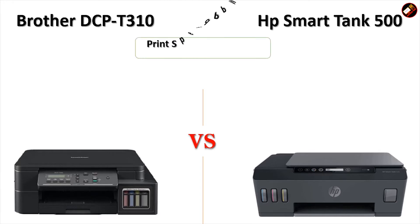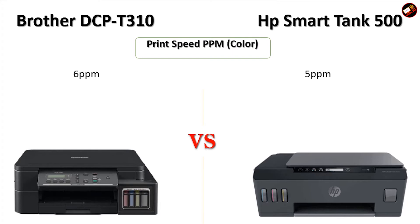Print Speed PPM, Color — Brother DCP T310: 6 PPM. HP Smart Tank 500: 5 PPM.